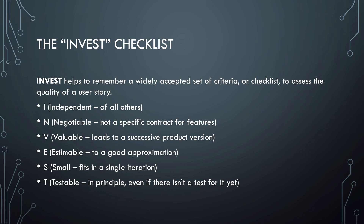In order to check the quality of a user story, you can use the INVEST checklist. A user story should be independent, so you can build it without side effects. It should be negotiable — the team should be able to decide to what level the feature is implemented. It should be valuable, estimable so you can indicate how much time building it will take, small so it fits into a single iteration, and testable so you can determine if it works as it should.